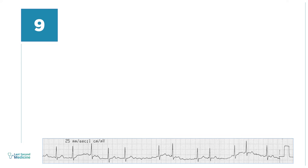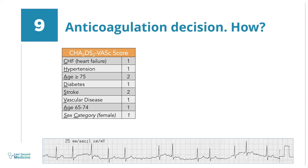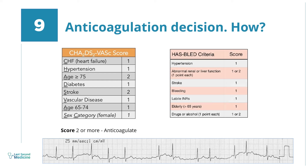Number 9. While considering anticoagulation, calculate the CHADS-VASC score. If the score is 2 or more, anticoagulate the patient. At the same time, to know the bleeding risk with anticoagulation, the HAS-BLED score is beneficial. If the HAS-BLED score is 3 or more, the patient has an increased risk of bleeding, and anticoagulation is then done based on clinical judgment.